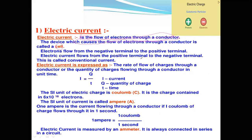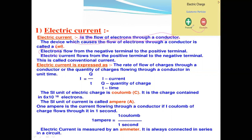Electrons flow from the negative terminal to the positive terminal. However, electric current flows from the positive terminal to the negative terminal. This is called conventional current.